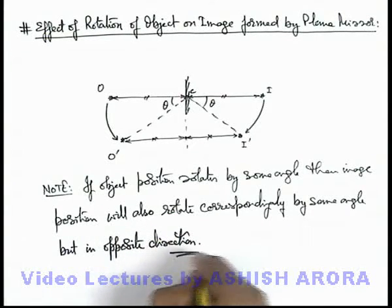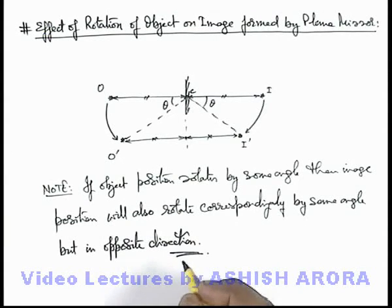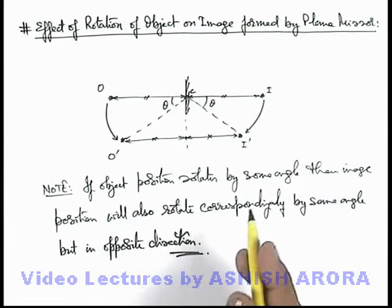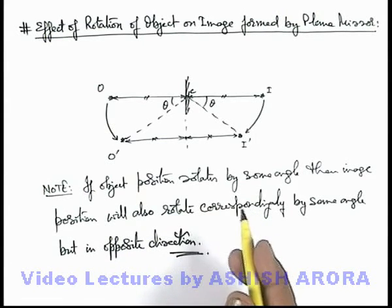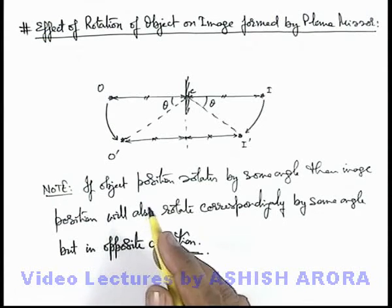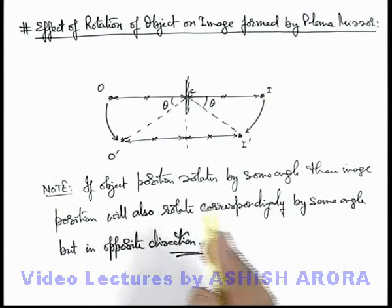So you must be very careful about the logic that if object rotates by say an angular speed omega, its image will correspondingly rotate with the same angular speed but in opposite direction. If object is rotating clockwise, image will rotate anticlockwise and vice versa.